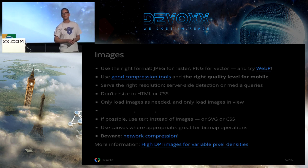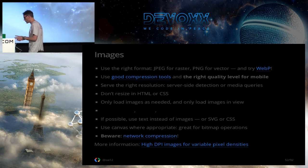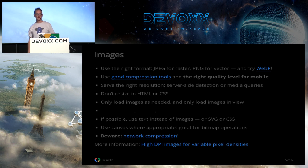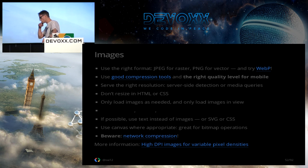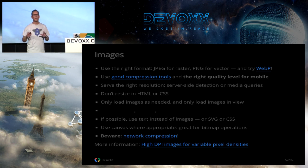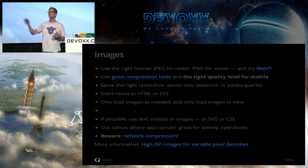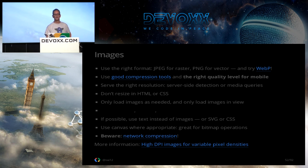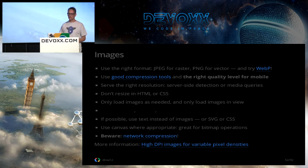Thinking about images, because these have really become the biggest problem on the mobile web: the obvious thing first is to use the right format for the right job — JPEG for raster images and so on — and to think about using good compression tools like TinyPNG. One thing I see again and again is people using image compression at too high a quality than they actually need for a mobile site. Almost start from the bottom and work up when working out what quality to save JPEGs as. It's obviously important to get the right resolution.